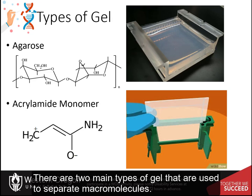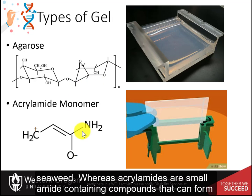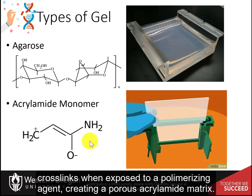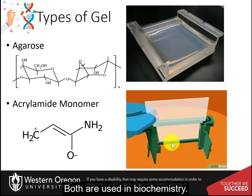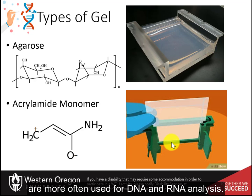There are two main types of gel used to separate macromolecules. The first is agarose, a long, linear polysaccharide primarily isolated from seaweed. The second is acrylamide — small amide-containing compounds that can form crosslinks when exposed to a polymerizing agent, creating a porous acrylamide matrix. Both are used in biochemistry: polyacrylamide gels are more often used for protein analysis, whereas agarose gels are more often used for DNA and RNA analysis.